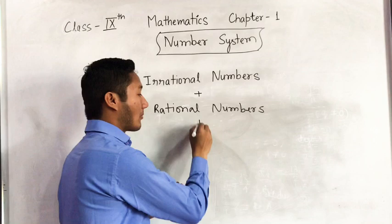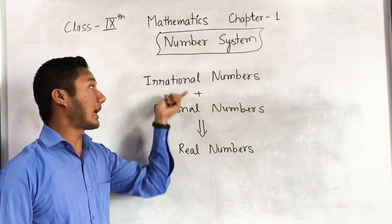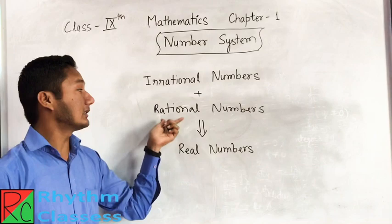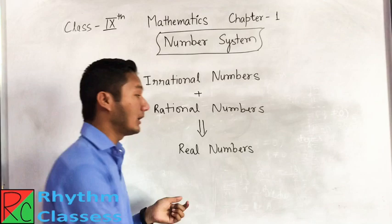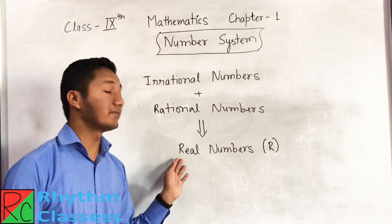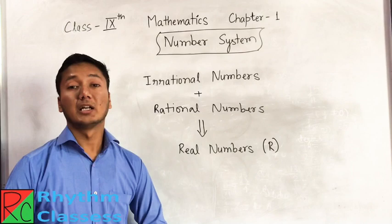Why are they called real numbers? Because they are either rational or irrational. We can show them on the number line. So all numbers which we can show on the number line are called real numbers. We represent them with R. One important thing to understand is that every real number has a unique point on the number line, and every point on the number line has a unique real number.